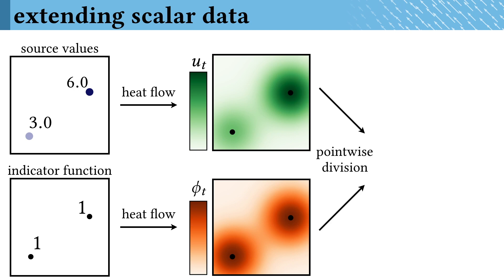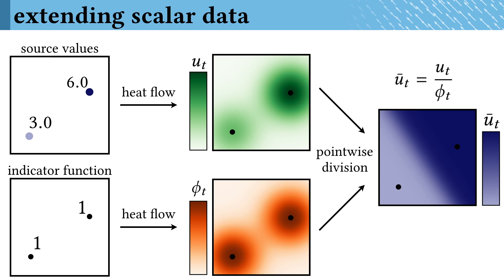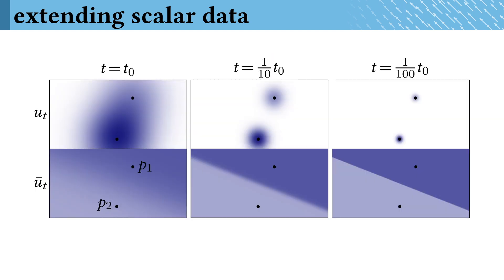Dividing these two distributions by one another yields an extension of the values to the whole domain. And amazingly, as you do this with shorter and shorter time heat flow, the result corresponds to a nearest neighbor extension of the data. In the lower rightmost frame, we see that the solution crisps up to take the value from the nearest source point.